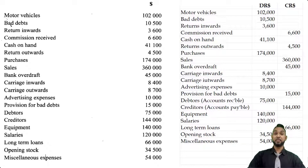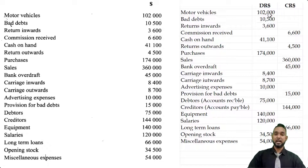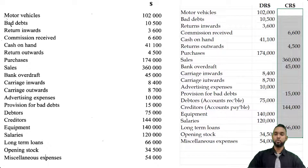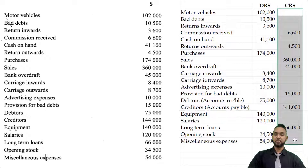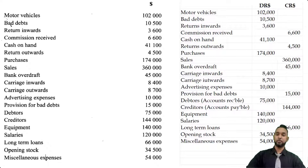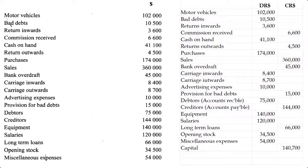We are missing capital from this trial balance. The question said to include capital, but they did not give us an amount. So we apply the basic accounting equation: assets or debit items minus liabilities or credit items equals capital. Add up everything in the debit column and everything in the credit column, find the difference — which will be the capital figure of $140,700 — and when you total both sides of your trial balance you get the same total of $781,800.